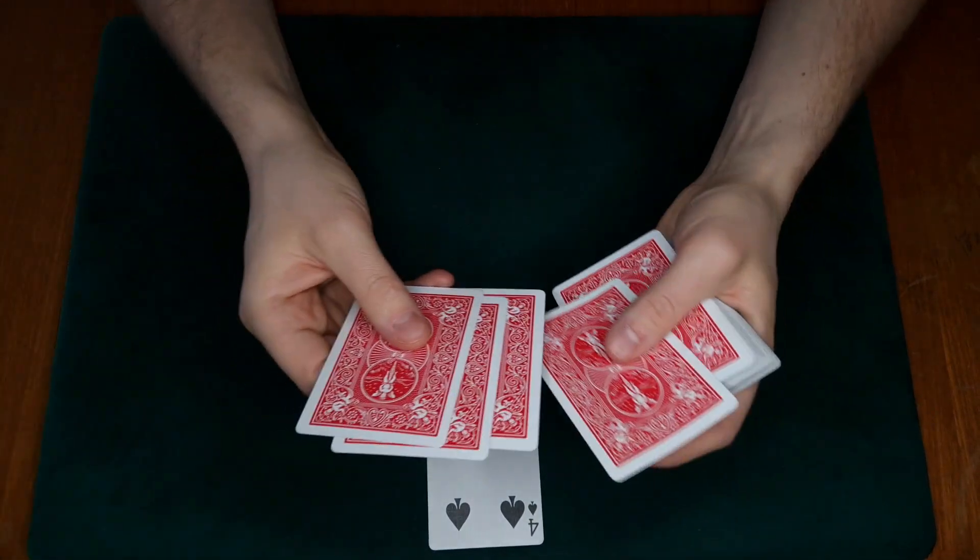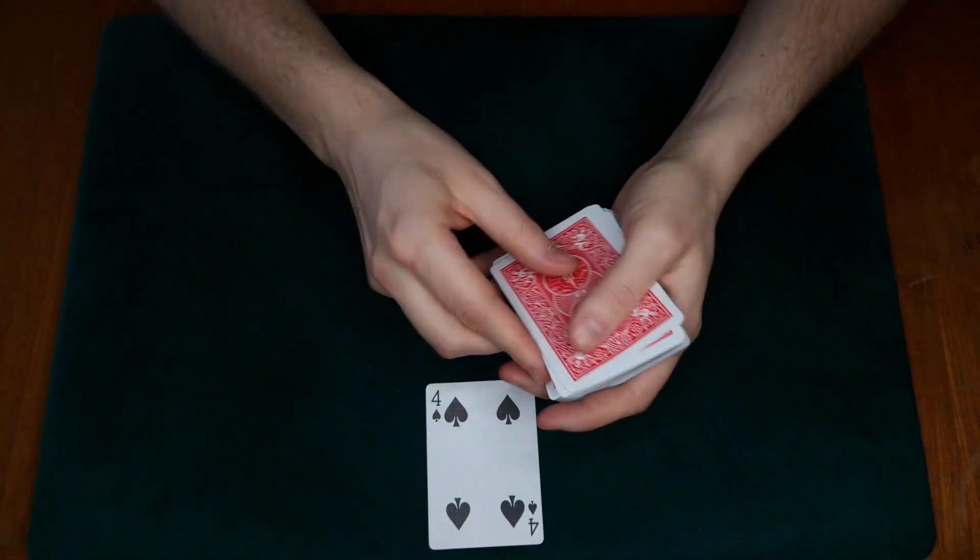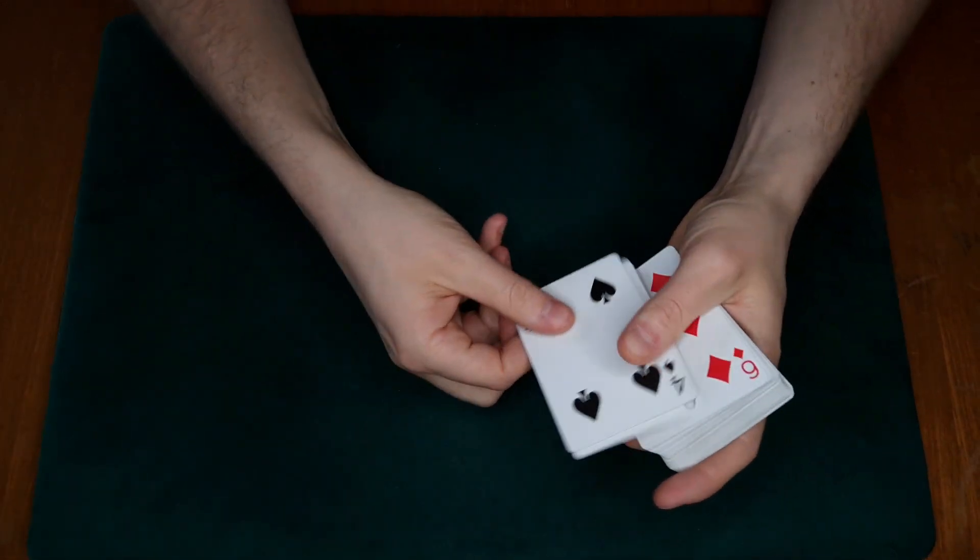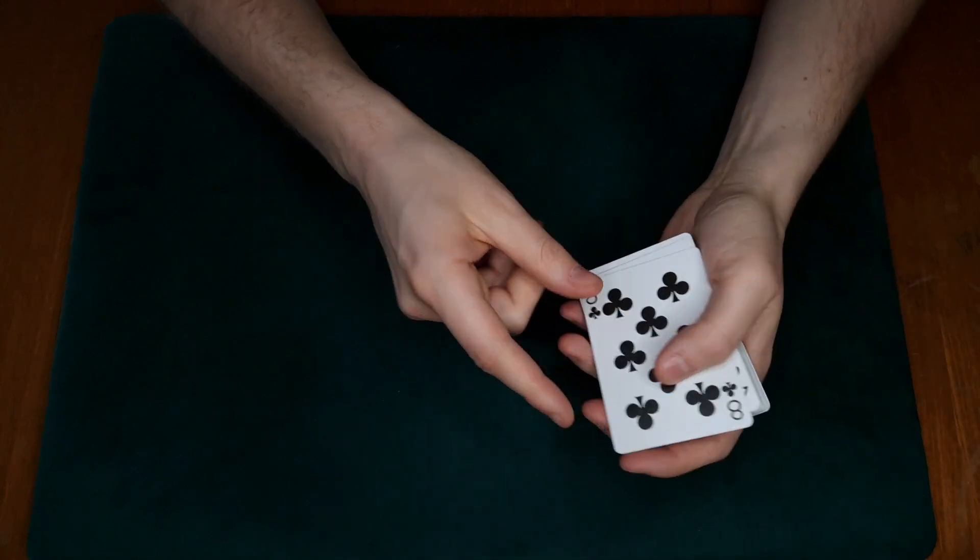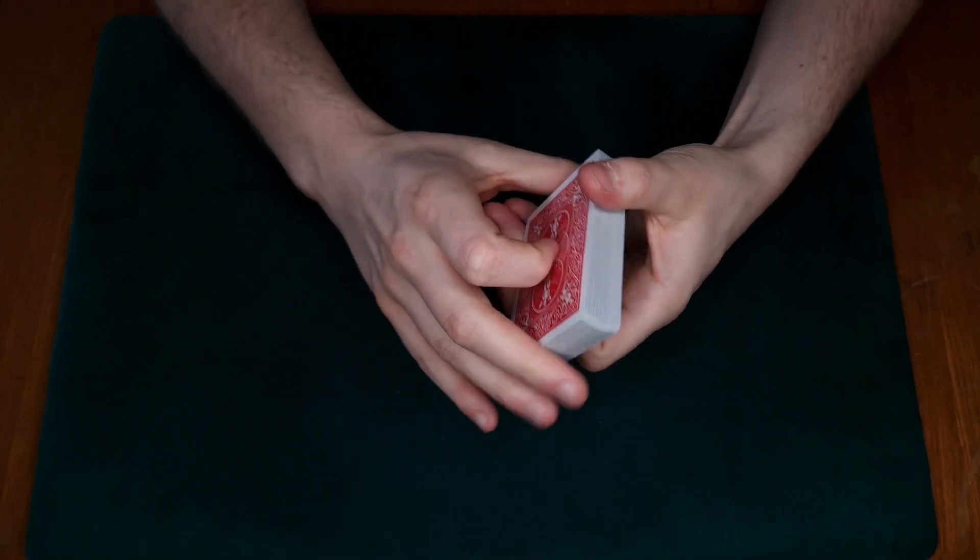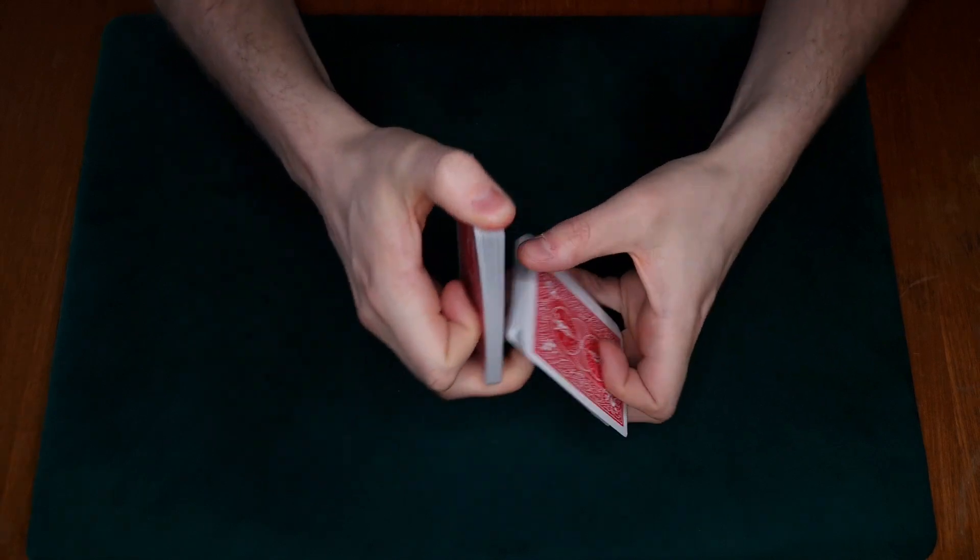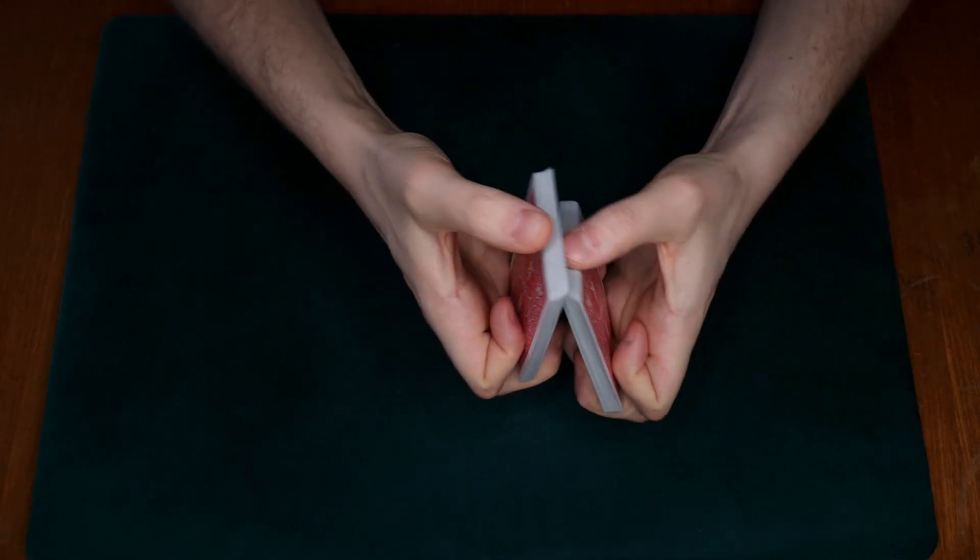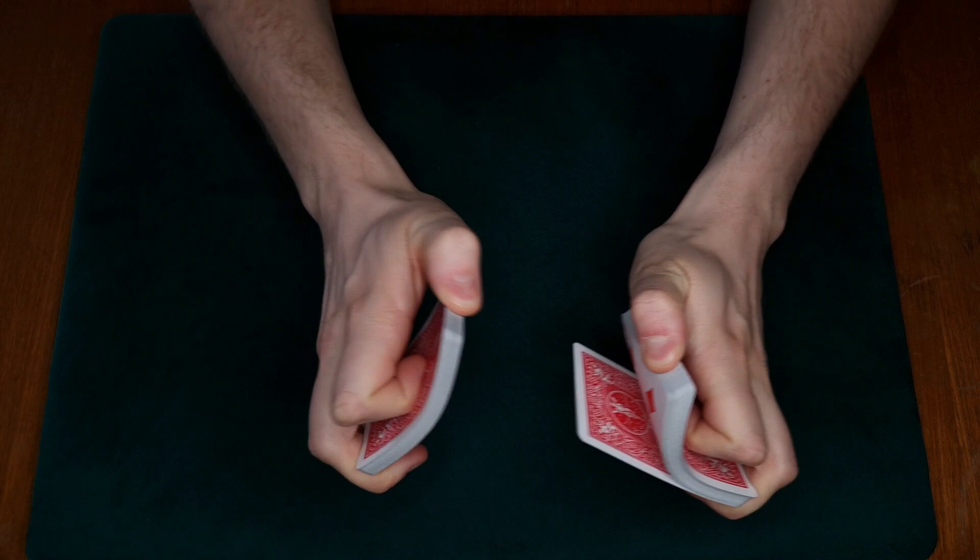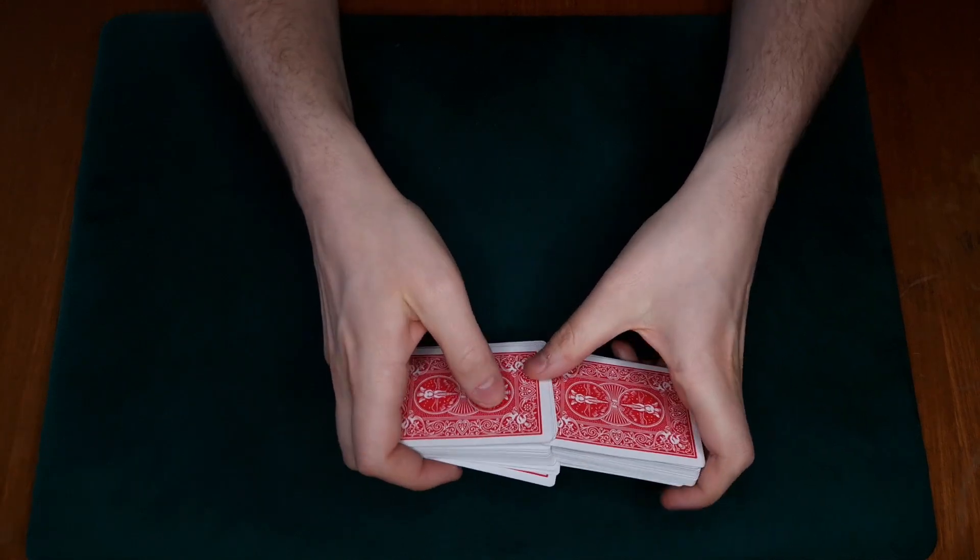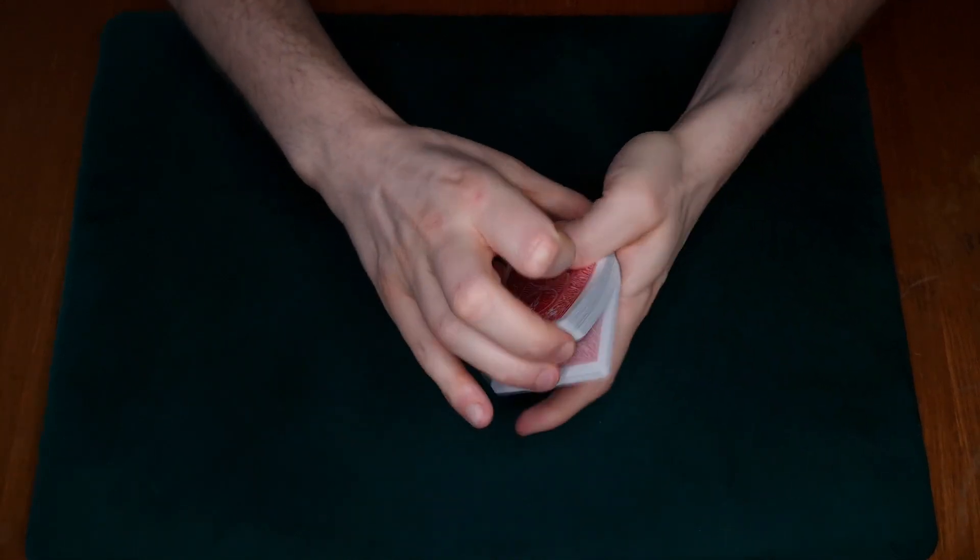And the last four goes second to the bottom, just like that. And we begin like that. We can begin by shuffling the cards, maybe give it a simple riffle shuffle, keeping those two cards at least on the bottom, keeping those fours on the top, something like that. Some false cuts if you want to.